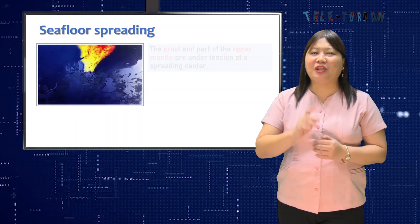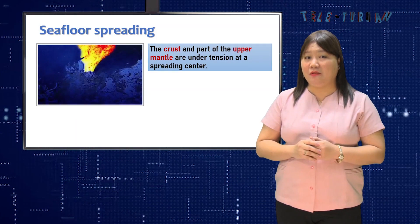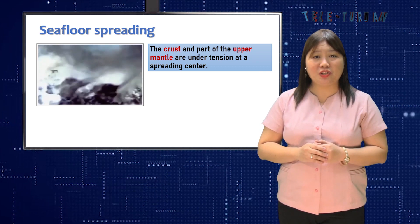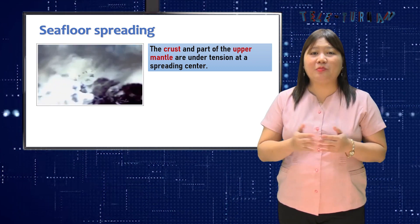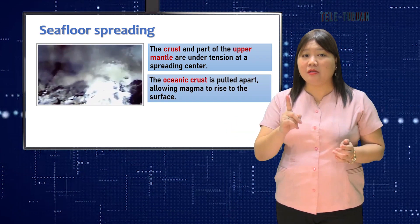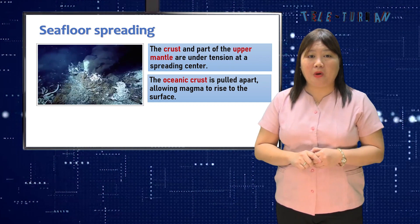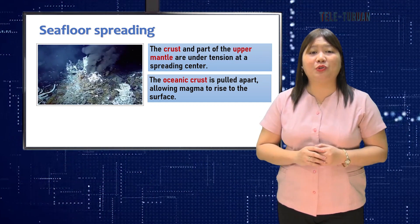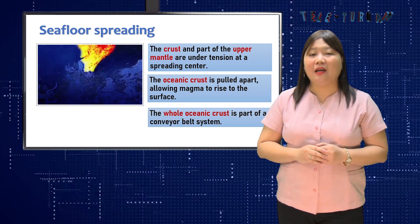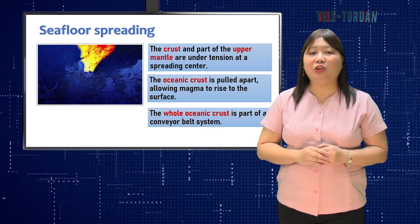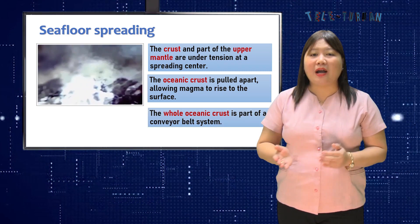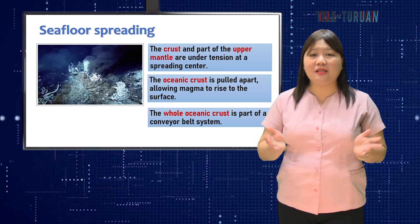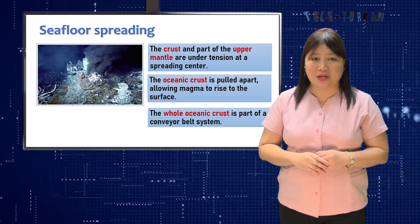It is now generally believed that crust and part of the upper mantle are under tension at the spreading center. Thus, the ocean crust is pulled apart, allowing magma to rise to the surface, and the whole oceanic crust is part of a conveyor belt system rising up at the mid-ocean ridges and eventually sinking down at the oceanic trenches.